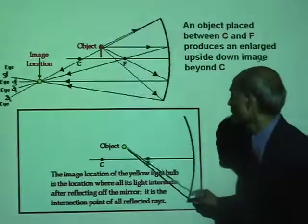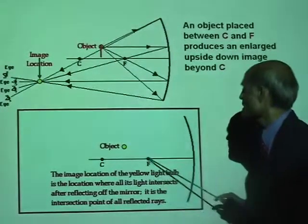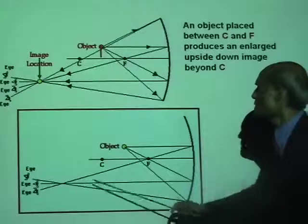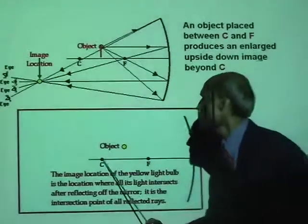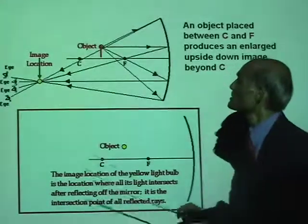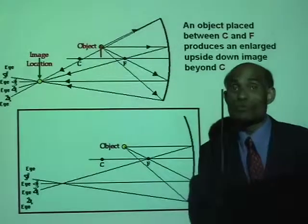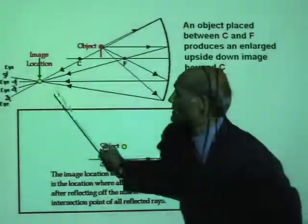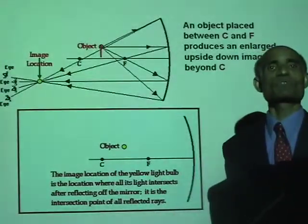There you have an object placed between the center of curvature and the principal focus, and the animation shows how the image is formed. The image is formed beyond C, it is magnified, inverted, and real — real because it is formed by the actual intersection of the reflected rays.